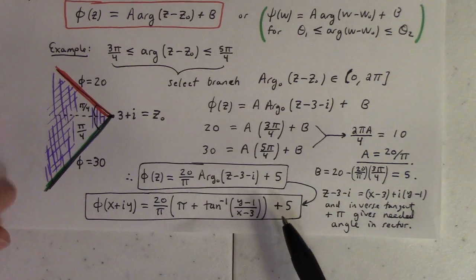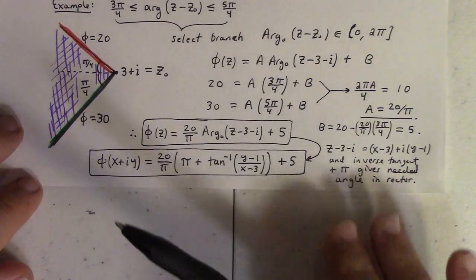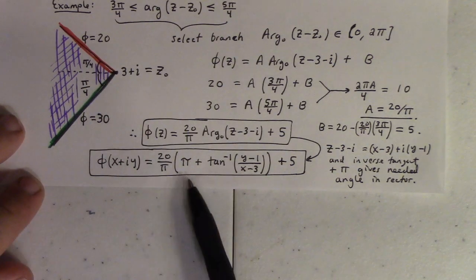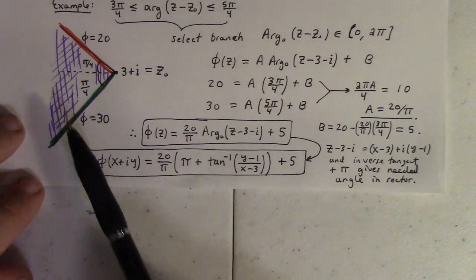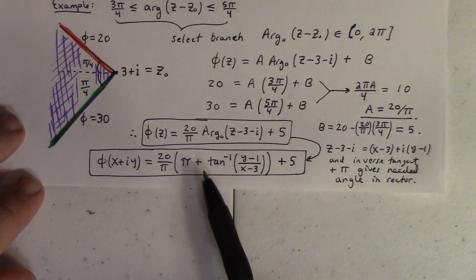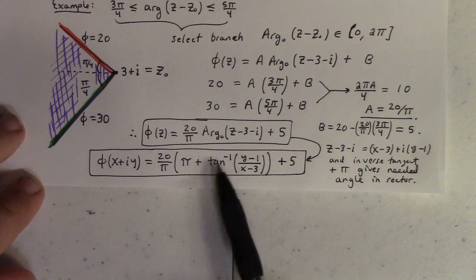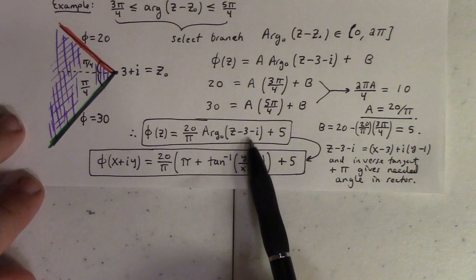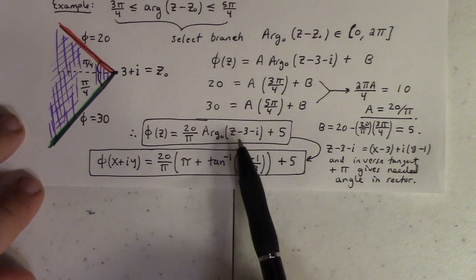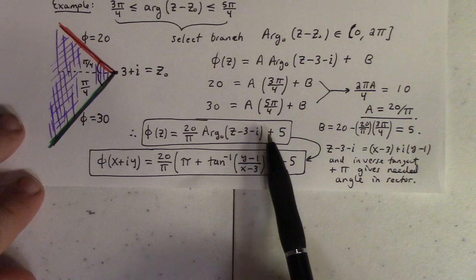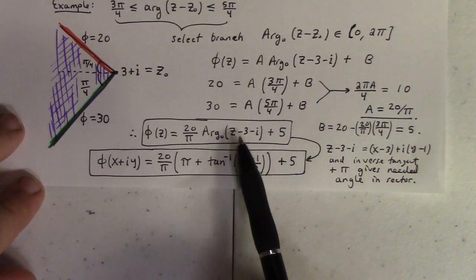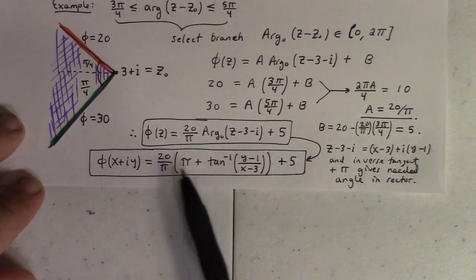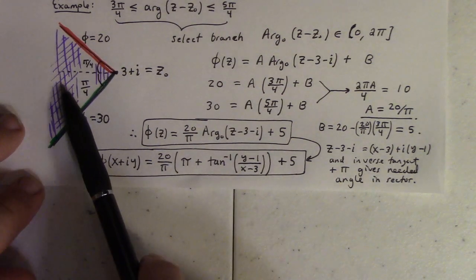In real notation, we need some trigonometry. In this region the inverse tangent doesn't work directly, so we use π plus the inverse tangent to get the angle between 3π/4 and 5π/4. Since z − 3 − i = (x − 3) + i(y − 1), and the argument is the inverse tangent of imaginary over real part, we can write the full real formula. That's the solution to Laplace's equation on that sector.